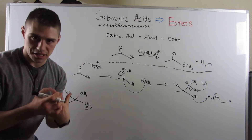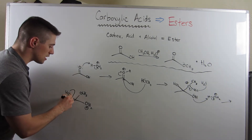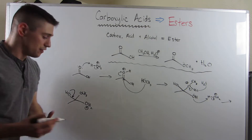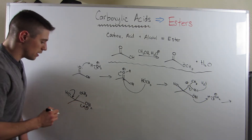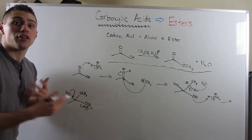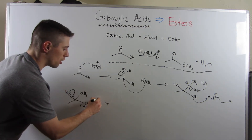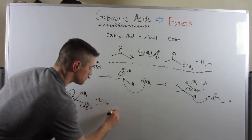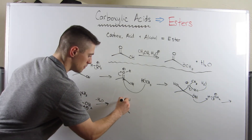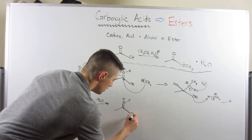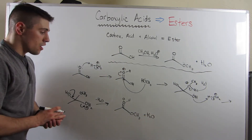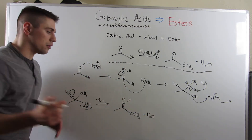We still have our tetrahedral intermediate, and now we're going to collapse it. The electrons swing down to form a double bond — that's the driving force for our good leaving group to leave, which is water. The tetrahedral intermediate collapses: electrons come down, form the double bond, and kick off water — that's our condensation step. The result: the carbonyl is reformed, and we do a quick cleanup step using water to remove the remaining proton.